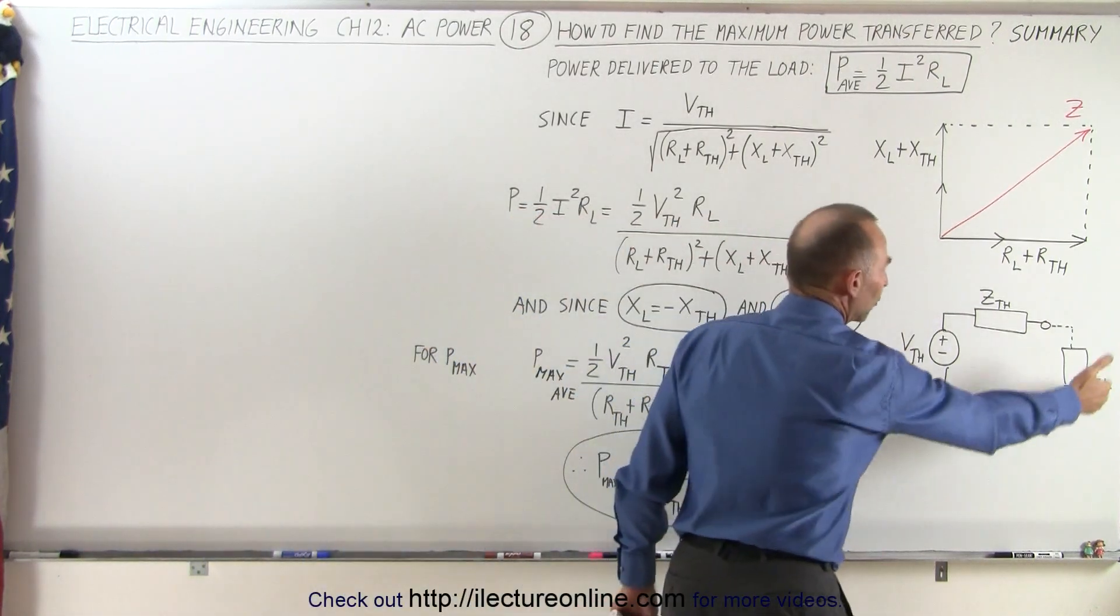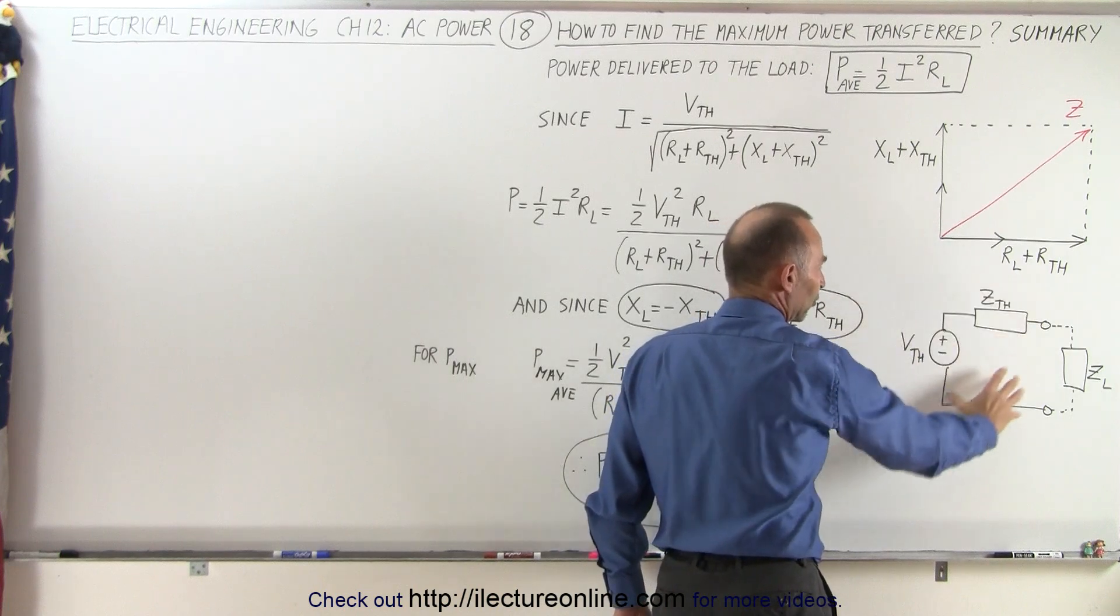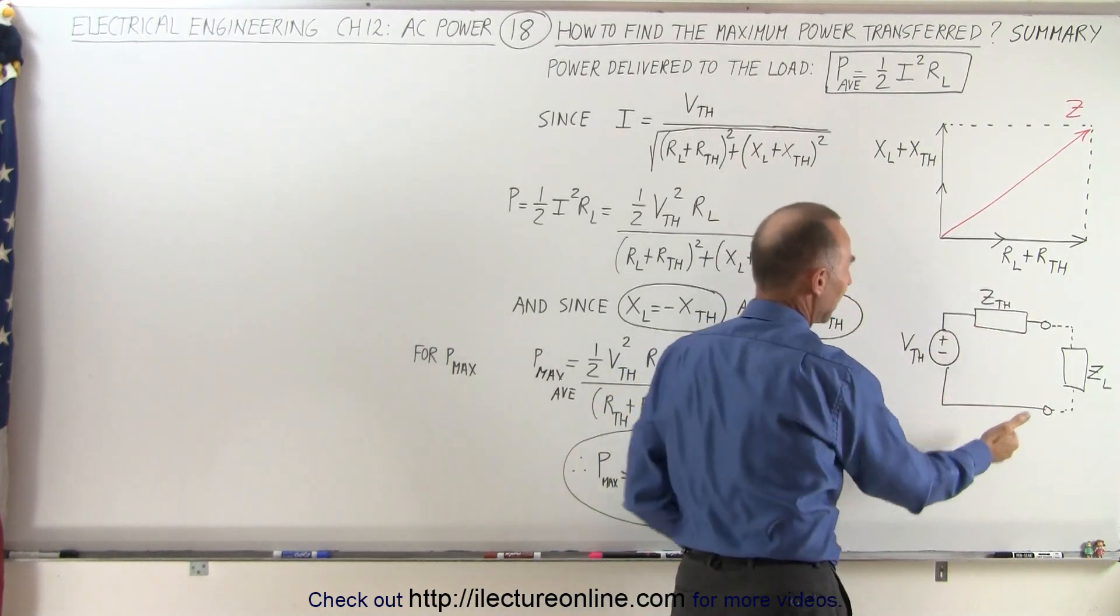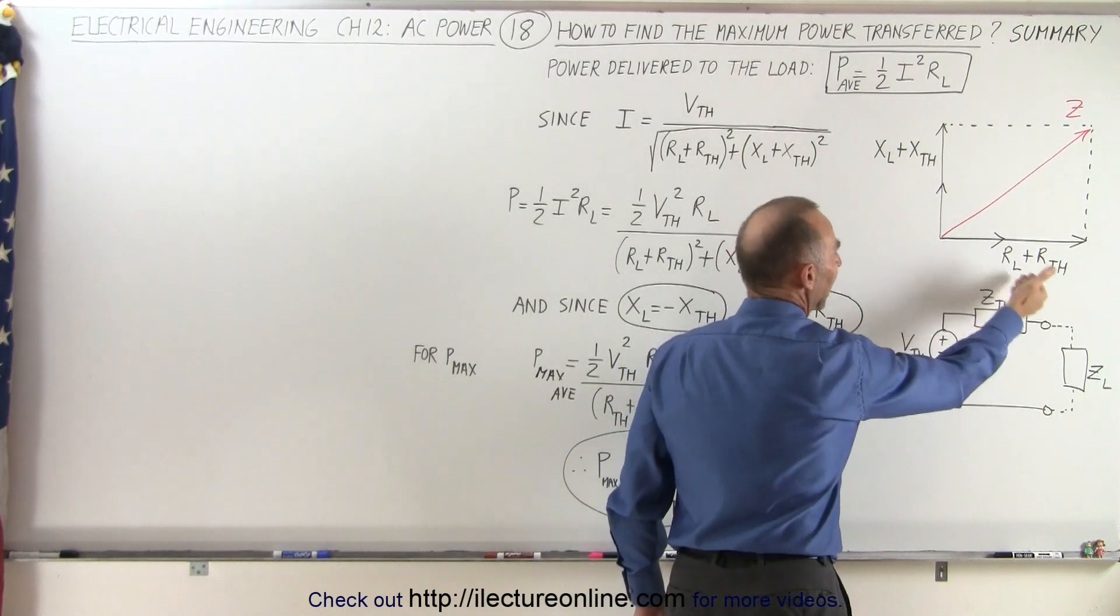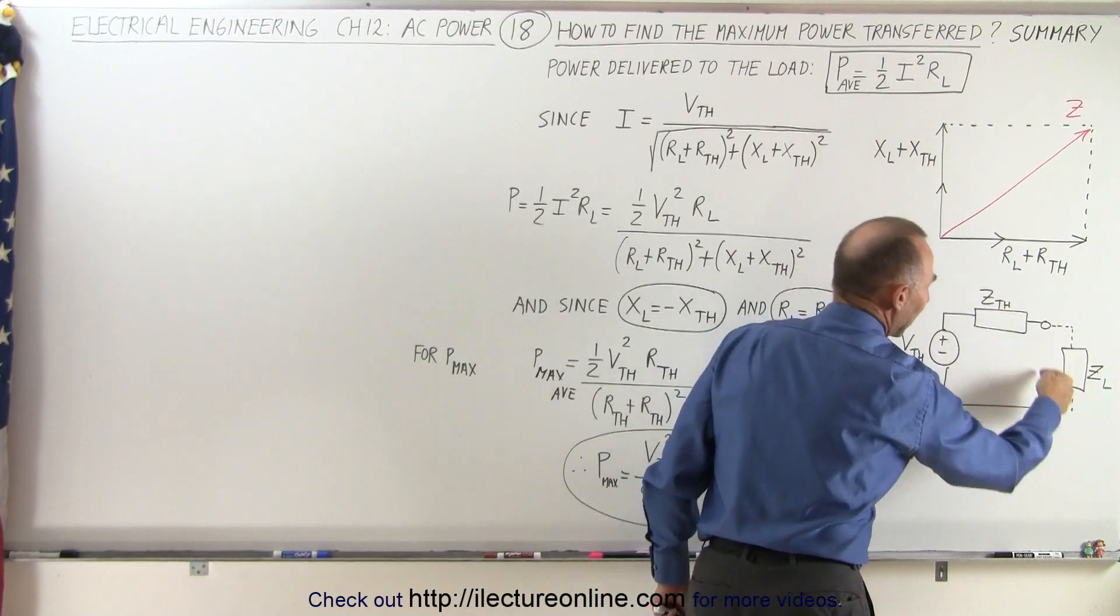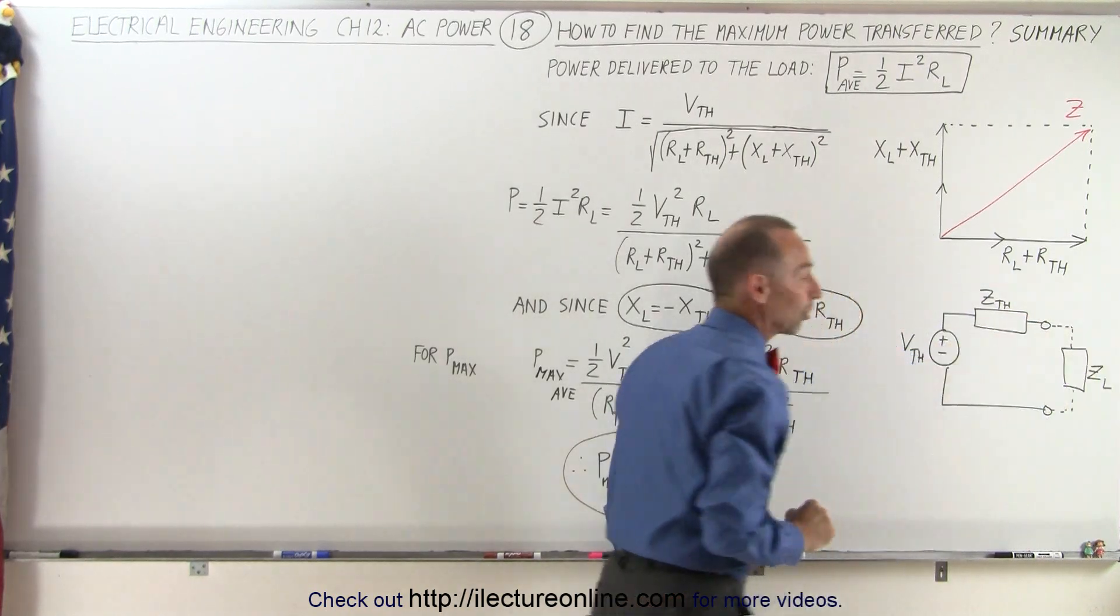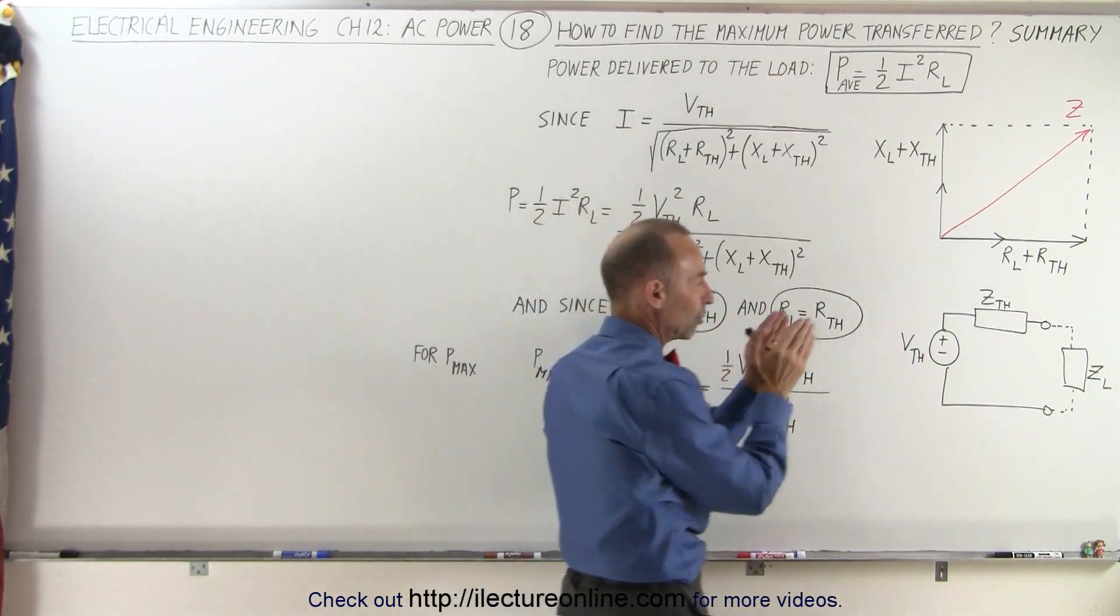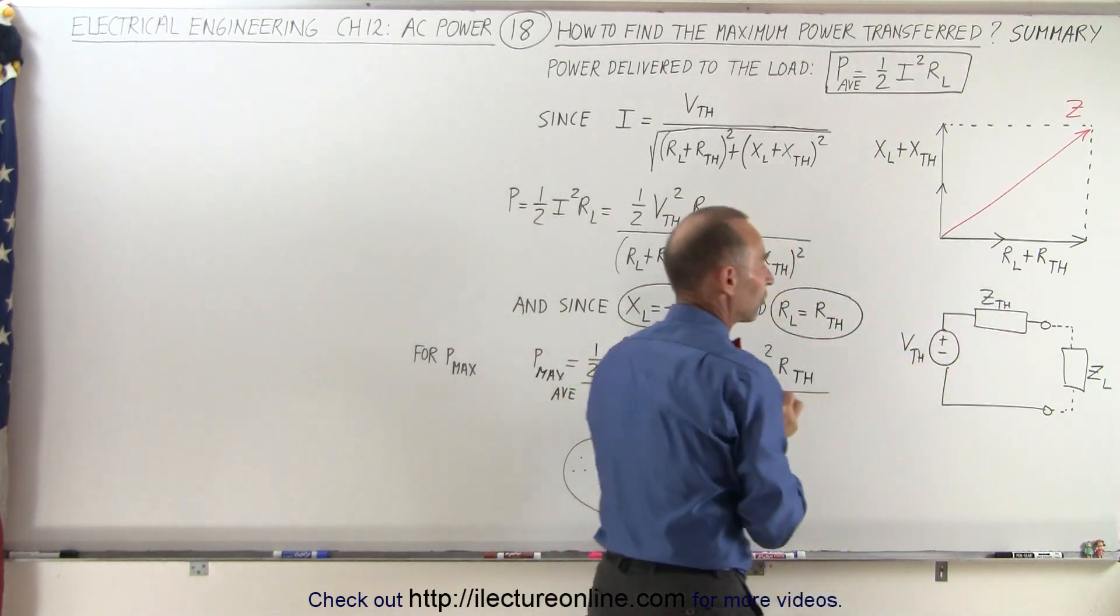Here we have a schematic of what that looks like. We're going to take our circuit that delivers the power and find the Thevenin voltage and the Thevenin impedance, and then we have the load impedance attached to our circuit. We want to deliver the maximum power to that circuit.